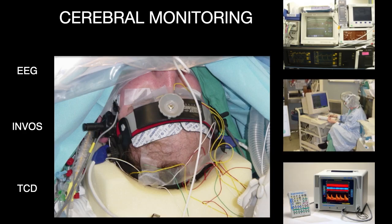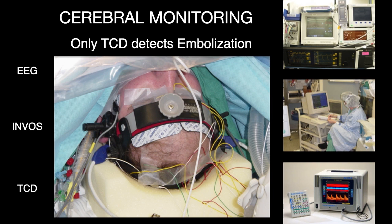There are a number of different ways in which we can perform cerebral monitoring. In this patient we're actually doing all three: EEG monitoring, which depends upon detecting change in electrical signals in the brain as a function of change in vascular supply; inverse venous oximetry, which measures venous oximetry in the frontal lobes, also dependent on change in arterial input; and transcranial Doppler, which in contrast directly measures the arterial flow. In addition, it's the only one that actually detects embolisation. EEG and inverse really don't detect embolisation unless it's massive, and embolisation is the most common problem associated with these complex proximal procedures.